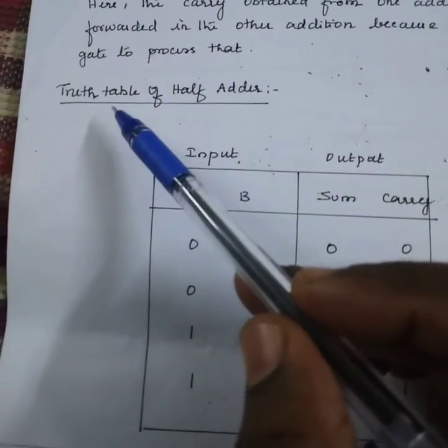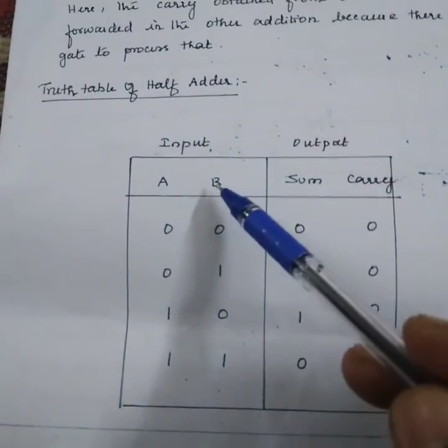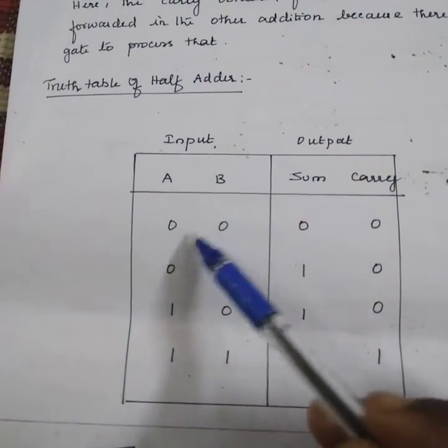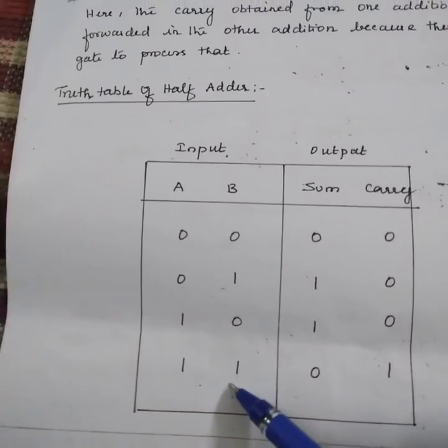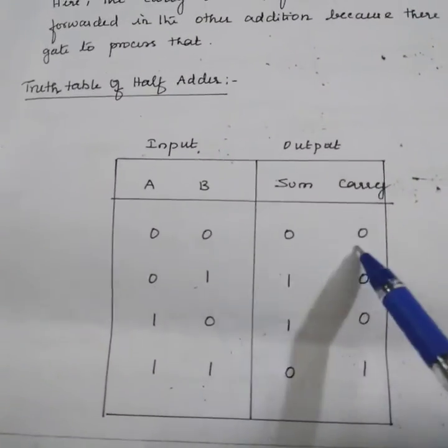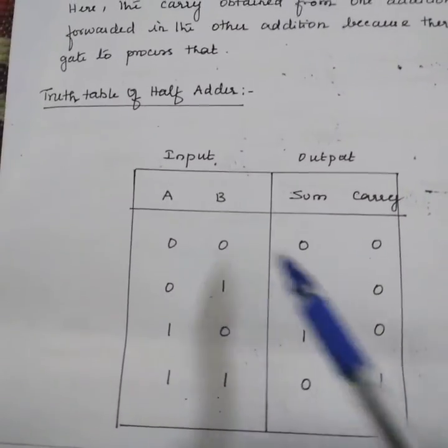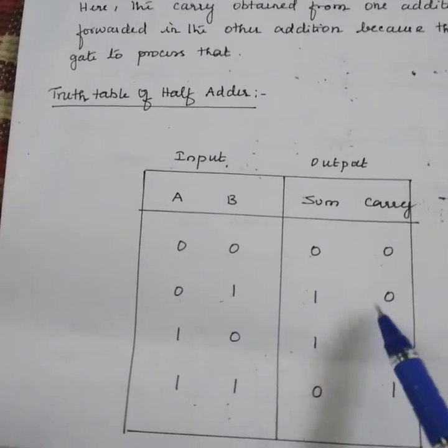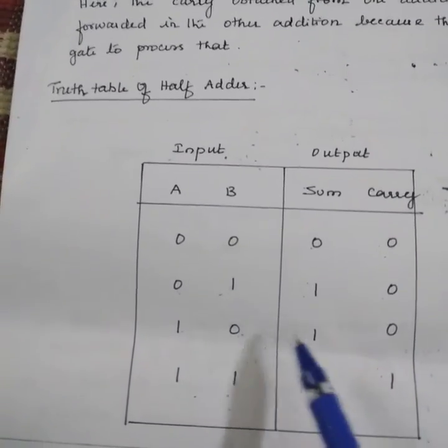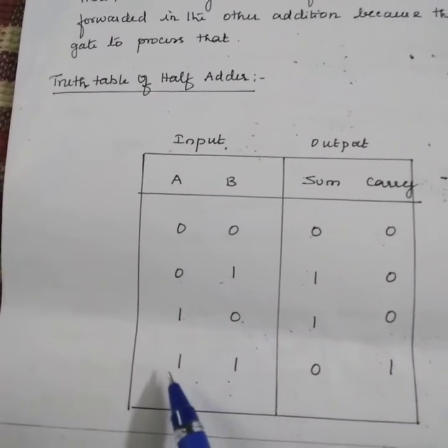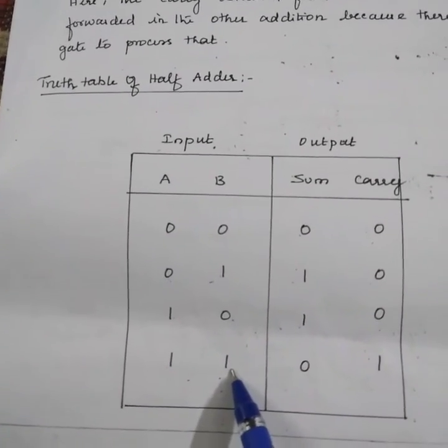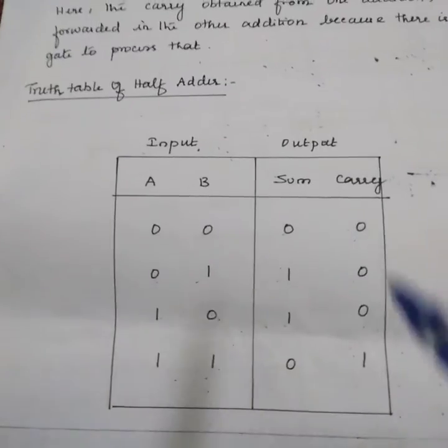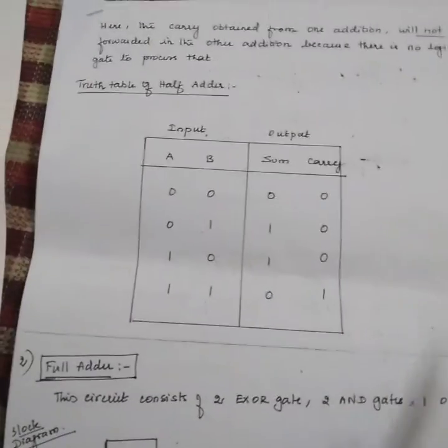Before that, we need to see its truth table. This will be the inputs: 0 0, 0 1, 1 0, and 1 1. Binary additions are being done: 0 plus 0 is 0, no carry. 0 plus 1 is 1, no carry. 1 plus 0 is 1, no carry. 1 plus 1 is 10, so 0 with carry 1.